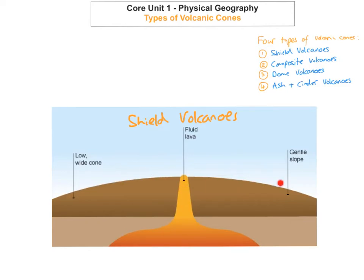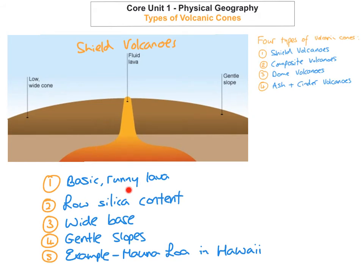The slopes are very gentle and it has a very wide base cone. So the width is very wide but the slopes are very gentle. An example of this would be Mauna Loa in Hawaii. You can pause the video and take those notes down.